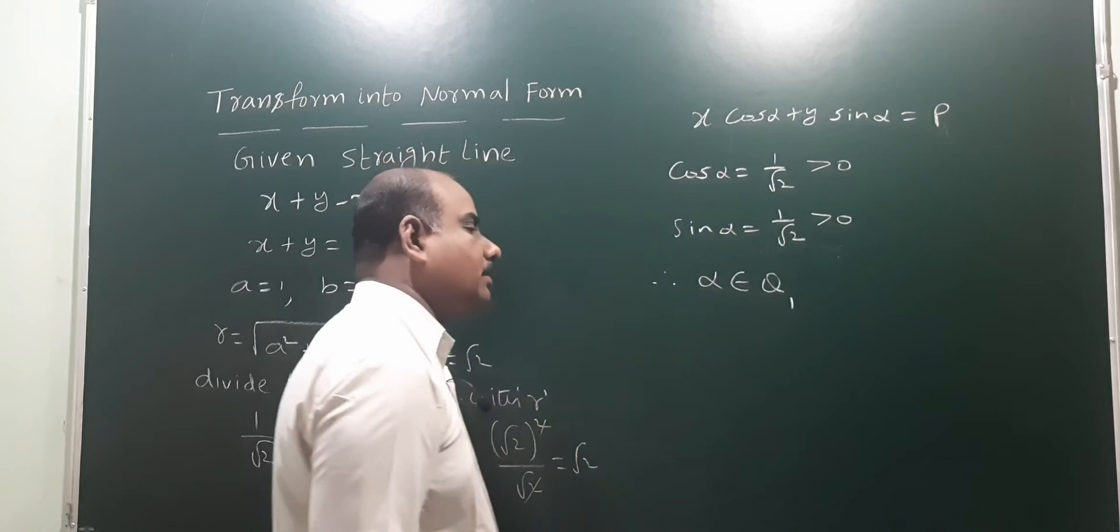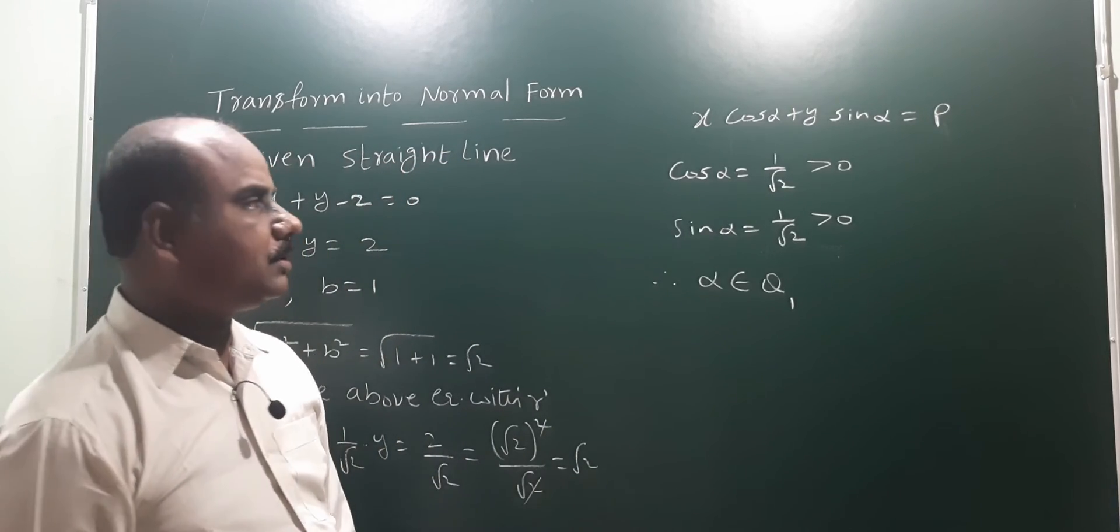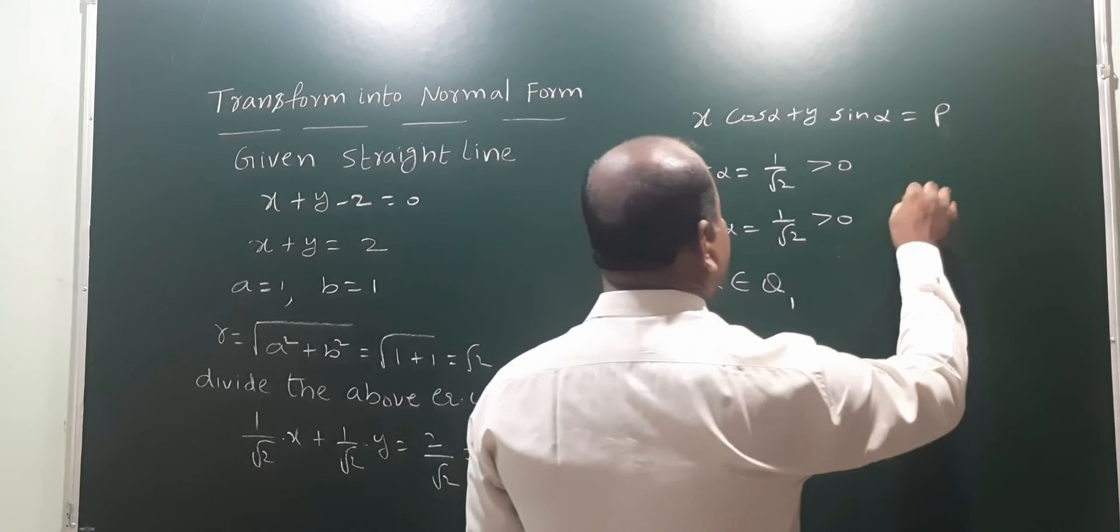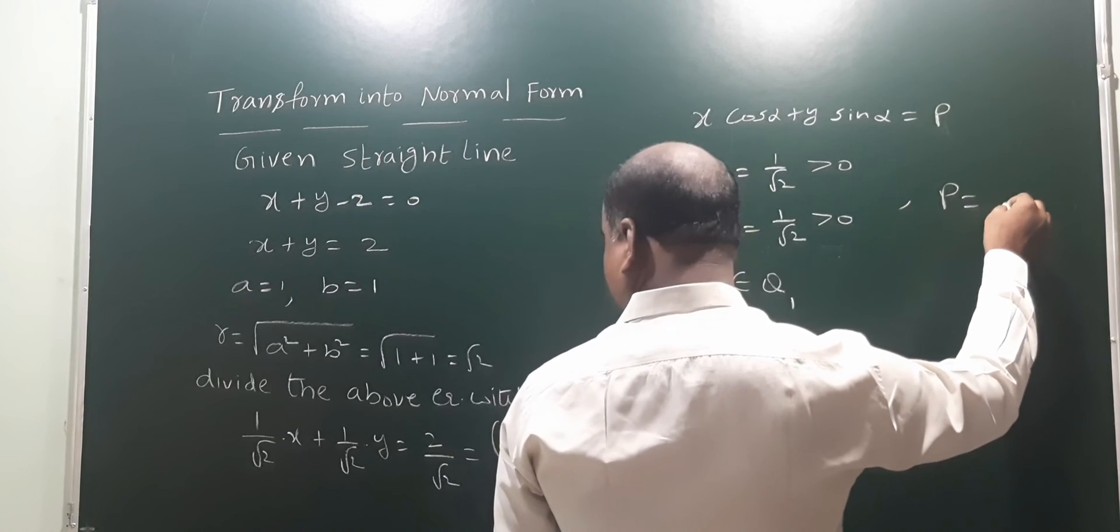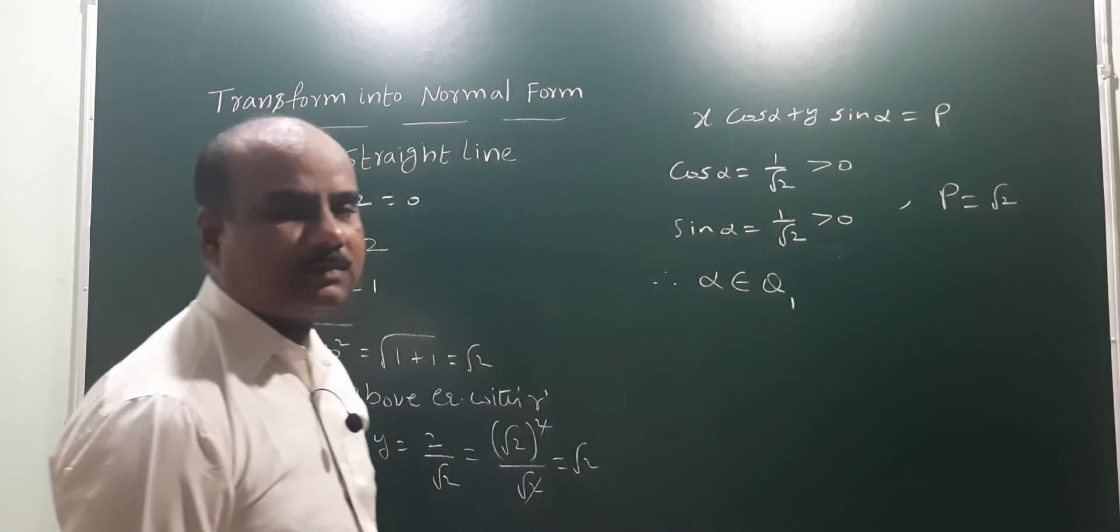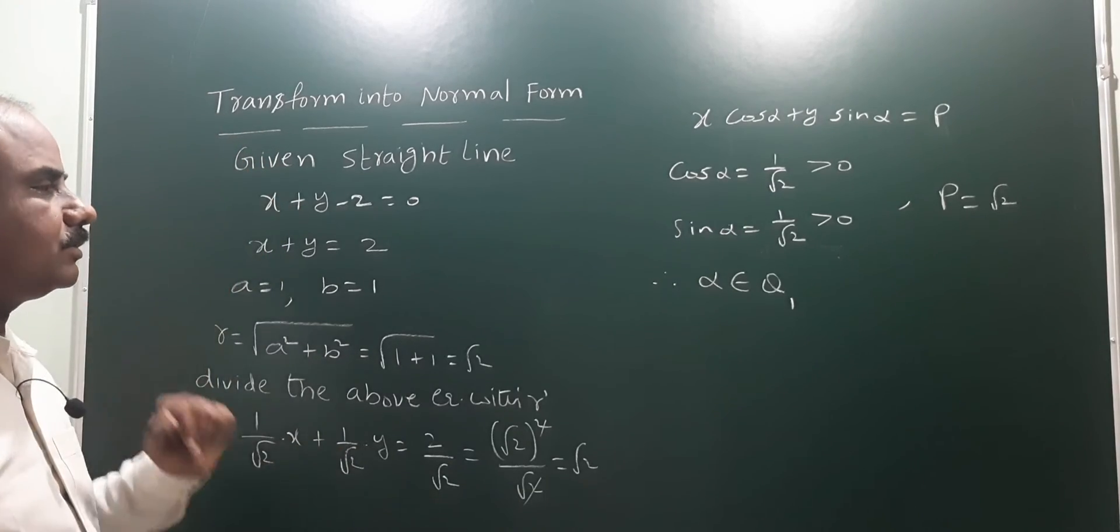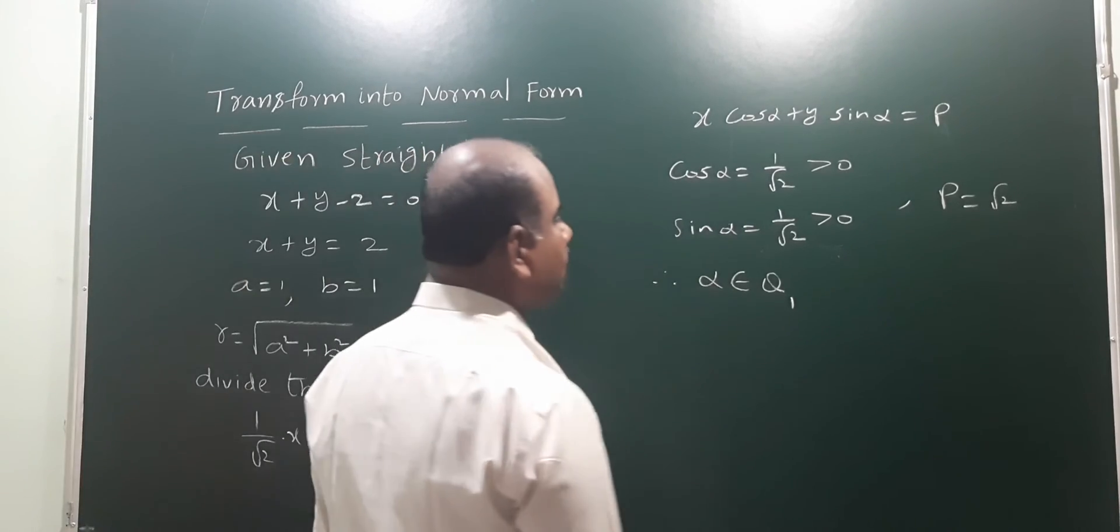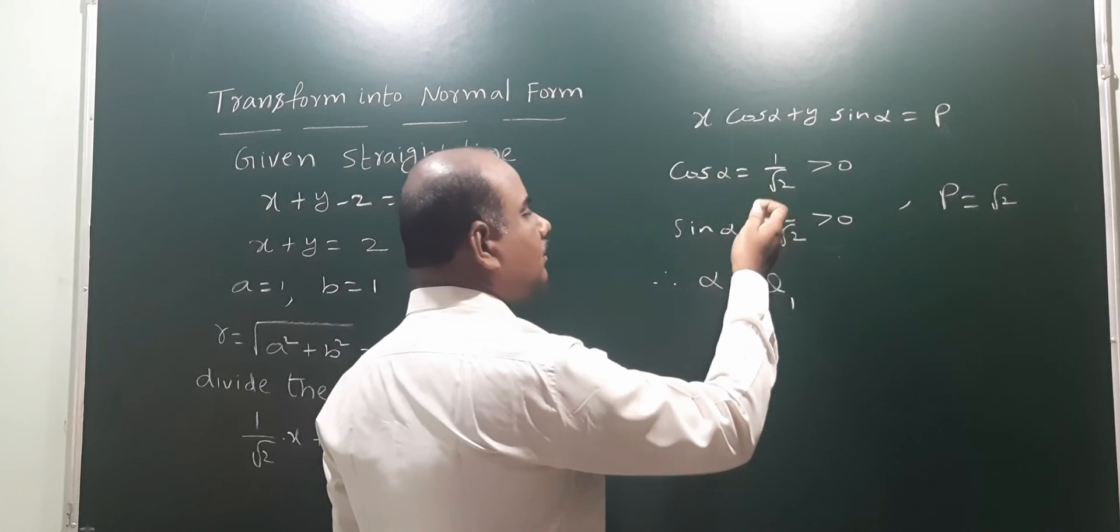And p equals root 2, which is the perpendicular distance from the origin to the given straight line. Therefore, cos alpha is 1 by root 2 and sin alpha is 1 by root 2.